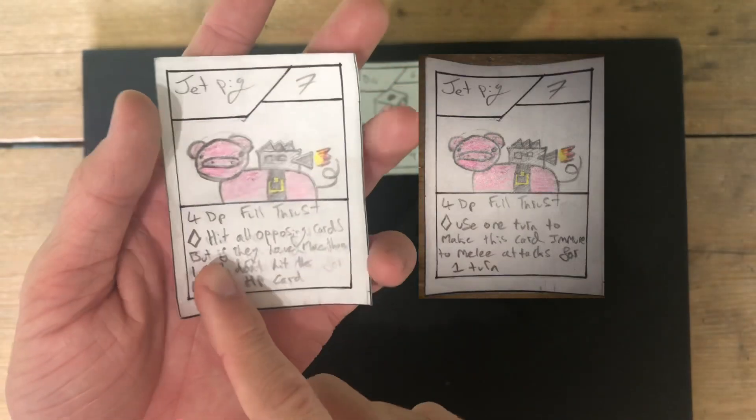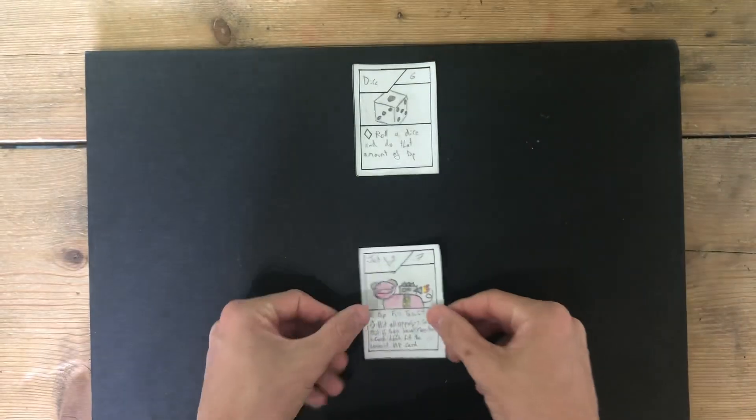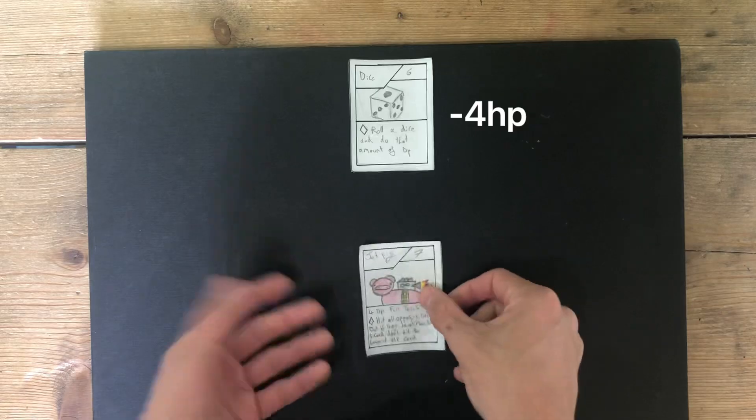JetPig has been reworked. His ability now is that he will hit all opposing cards, but if there is more than 1, then he will not hit the card with the lowest HP. In this scenario, because there is 1 card, he will hit it, dealing 4 damage.